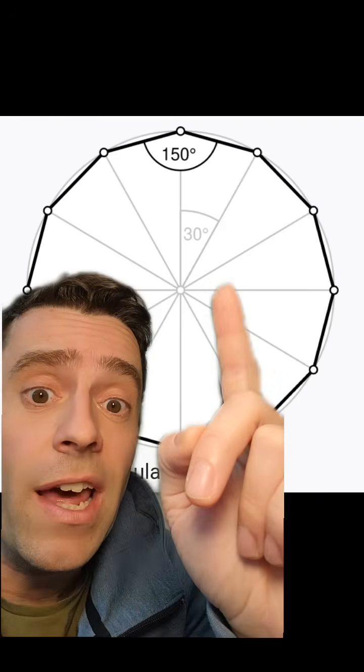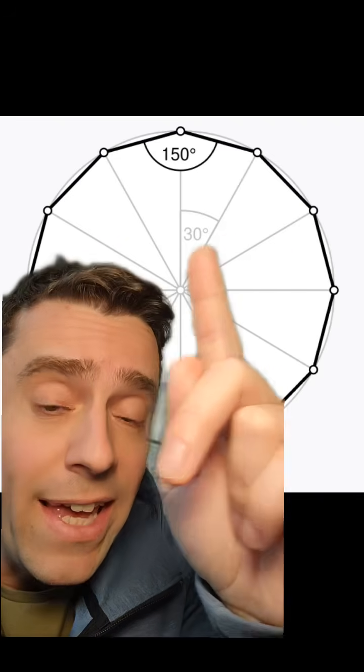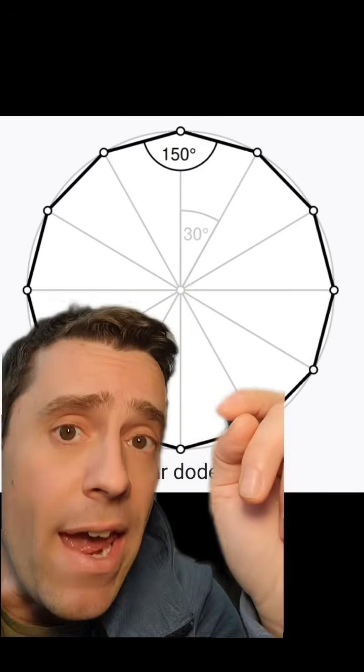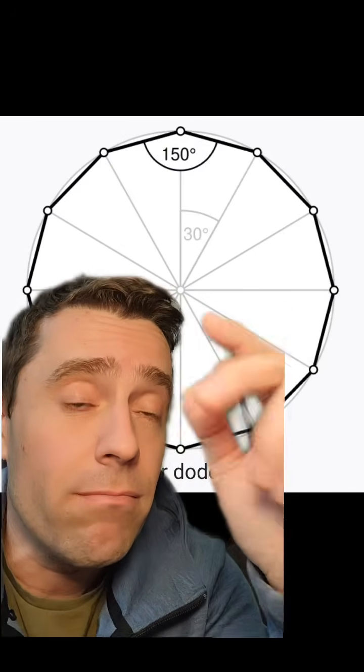That's weird because it really looks like the dodecagon is really inscribed and smaller than the circle, but we've just found out that they actually have the same area, 3 and 3 pi.